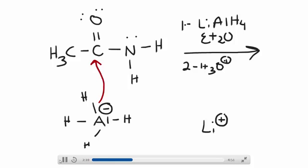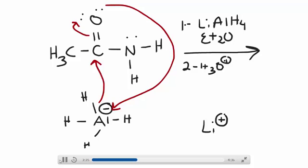The hydride will use its pair of electrons to form a bond to the carbonyl carbon. Carbon can't have five bonds, so you break the pi bond between carbon and oxygen. As that is occurring, the oxygen will form a bond to the aluminum. Or you can show the electrons in the double bond forming the bond to the aluminum, since they're coming from the oxygen. Either of those two ways is perfectly fine.